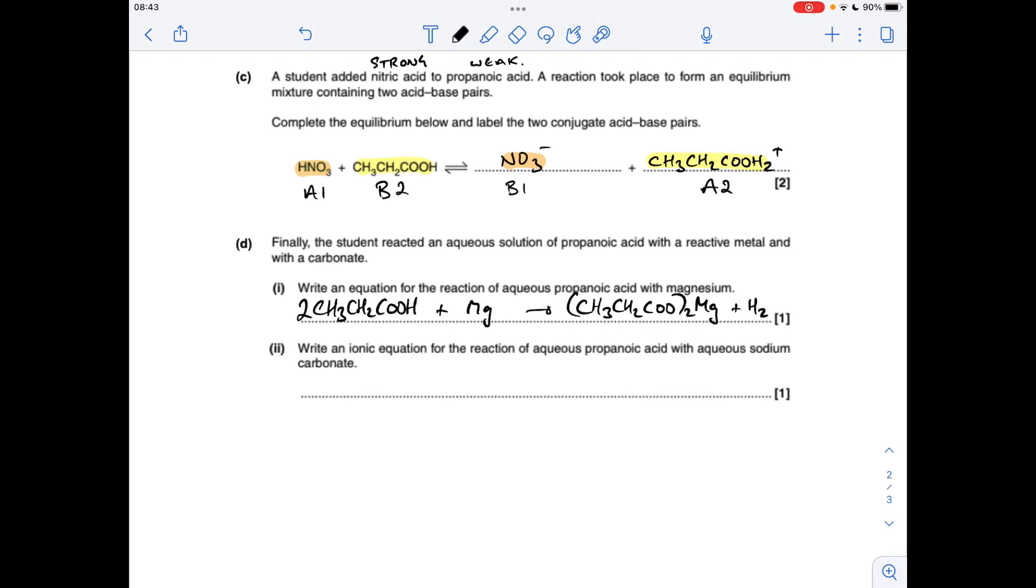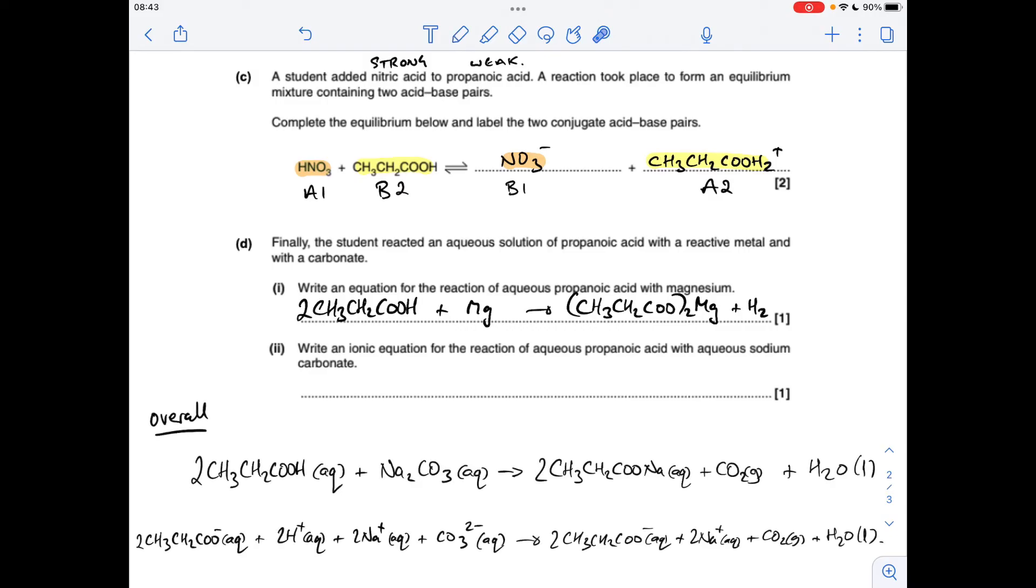For the second one, I'm going to break it right down. I'm going to write the full equation, then pull the ions out, and then we'll talk about the ionic equation as a result of that. I know this is a bit of overkill just for one mark, but if there's anybody not quite sure about ionic equations still, hopefully you'll appreciate this. So the overall equation between propanoic acid and sodium carbonate, I'm putting the state symbols in, you'll see why in the next step. Acid plus carbonate makes salt, water and carbon dioxide. So that's the overall equation.